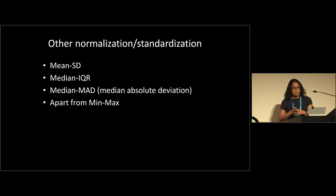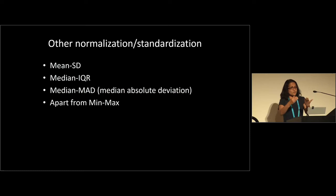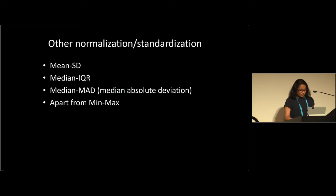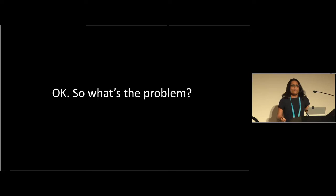Apart from min-max, the key distinction is that min-max and mean standard deviation are sensitive to outliers — the moment you introduce an outlier, your transformed data changes. Whereas median IQR and median-MAD are robust methods: even if you have outliers, they are not greatly affected. Min-max is a decent, good method, but there are limitations to always fixing upon it.